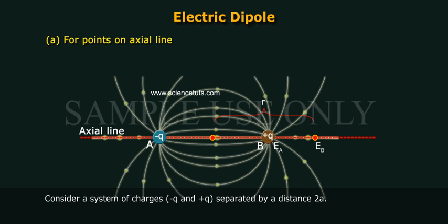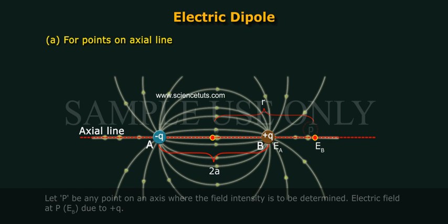Consider a system of charges minus Q and plus Q separated by a distance 2a. Let P be any point on the axis where the field intensity is to be determined.